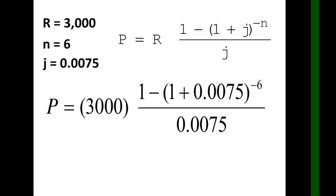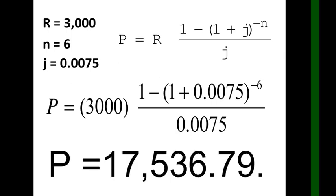After that, divide by 0.0075, click equals. After that, times 3,000. I repeat, times 3,000. Then click equals.